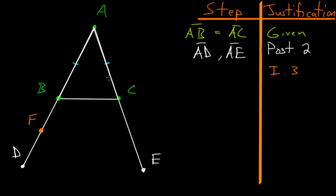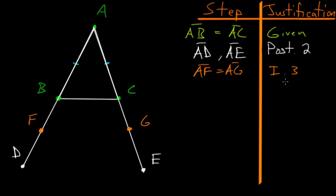Using Book 1, Postulate 3, we can duplicate line AF on line AE — in other words, we can find point G such that AF equals AG. The essence of Postulate 3 is that if we have two lines of unequal length, we can take out a portion of the bigger line equal to the smaller line.